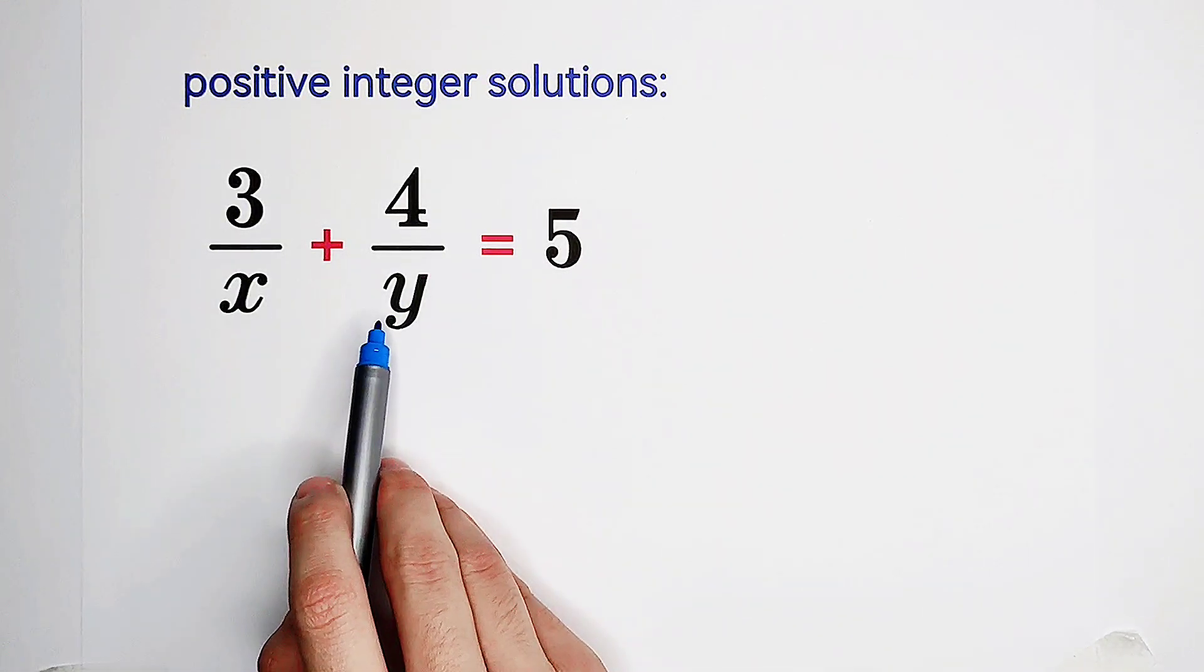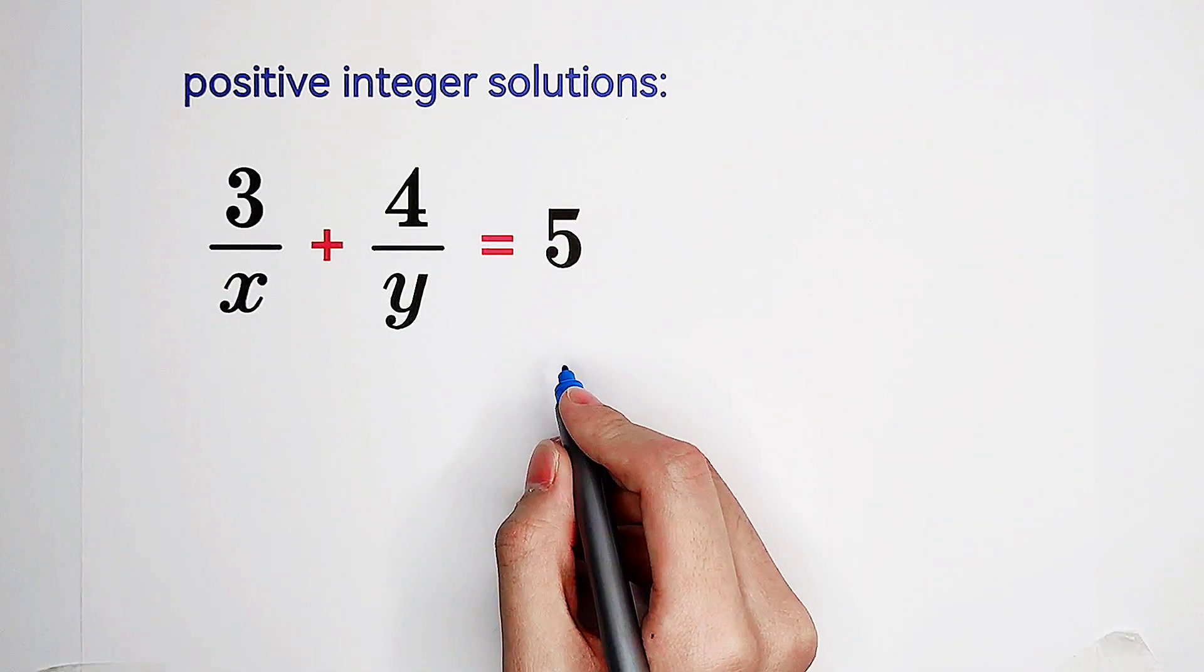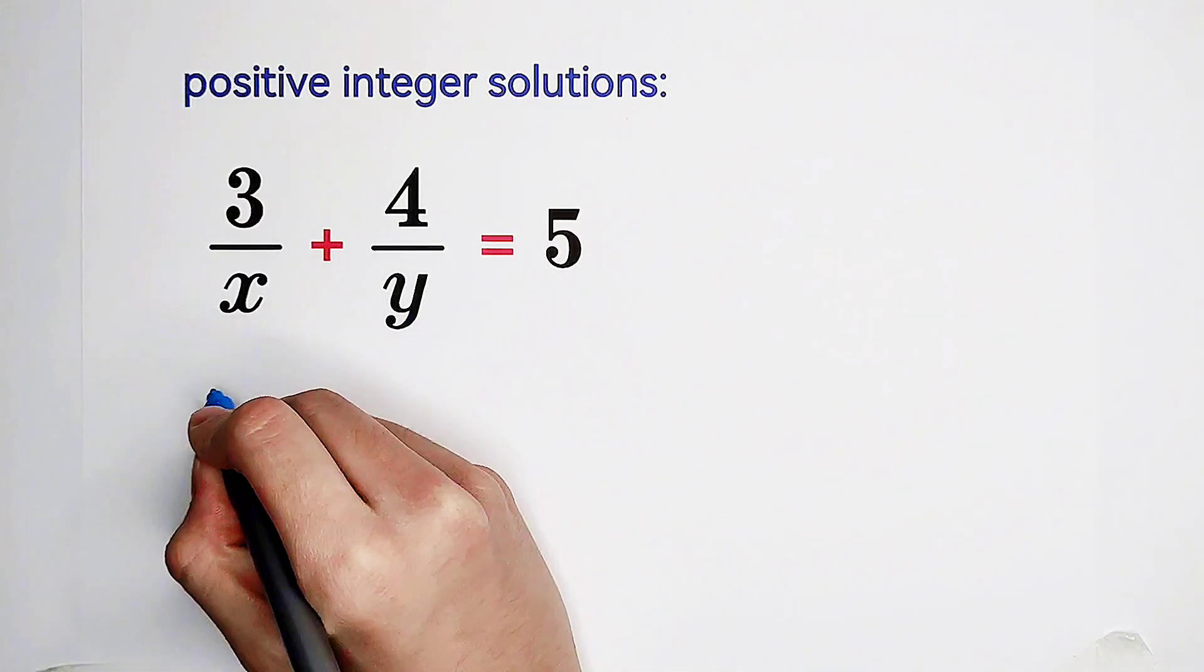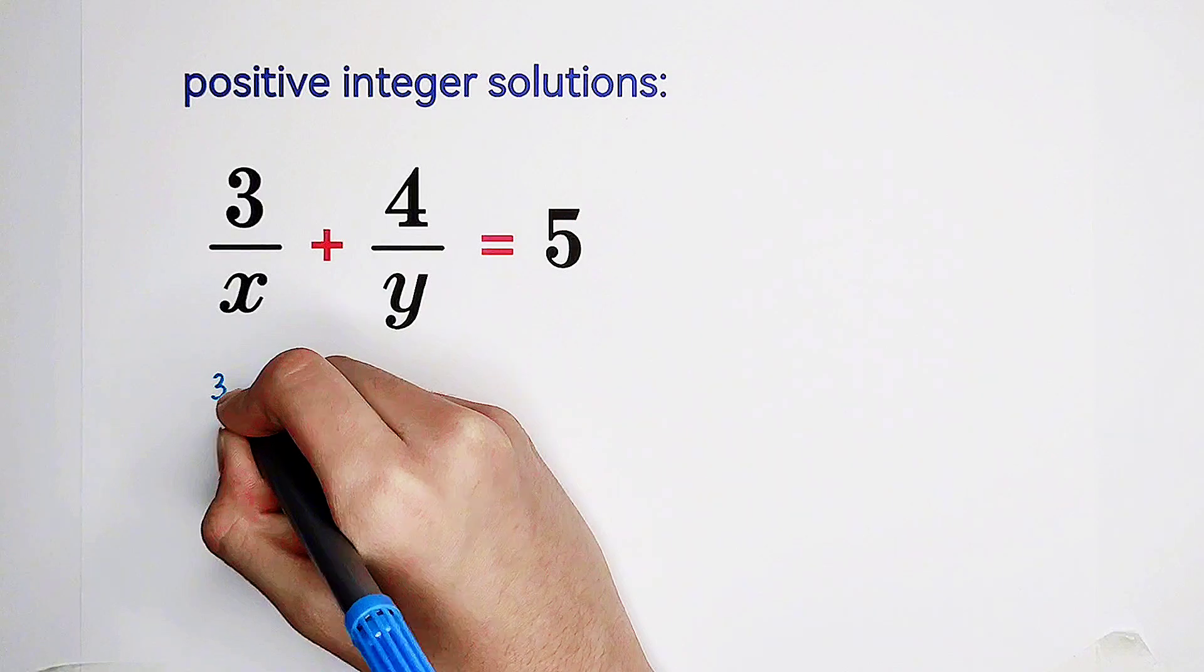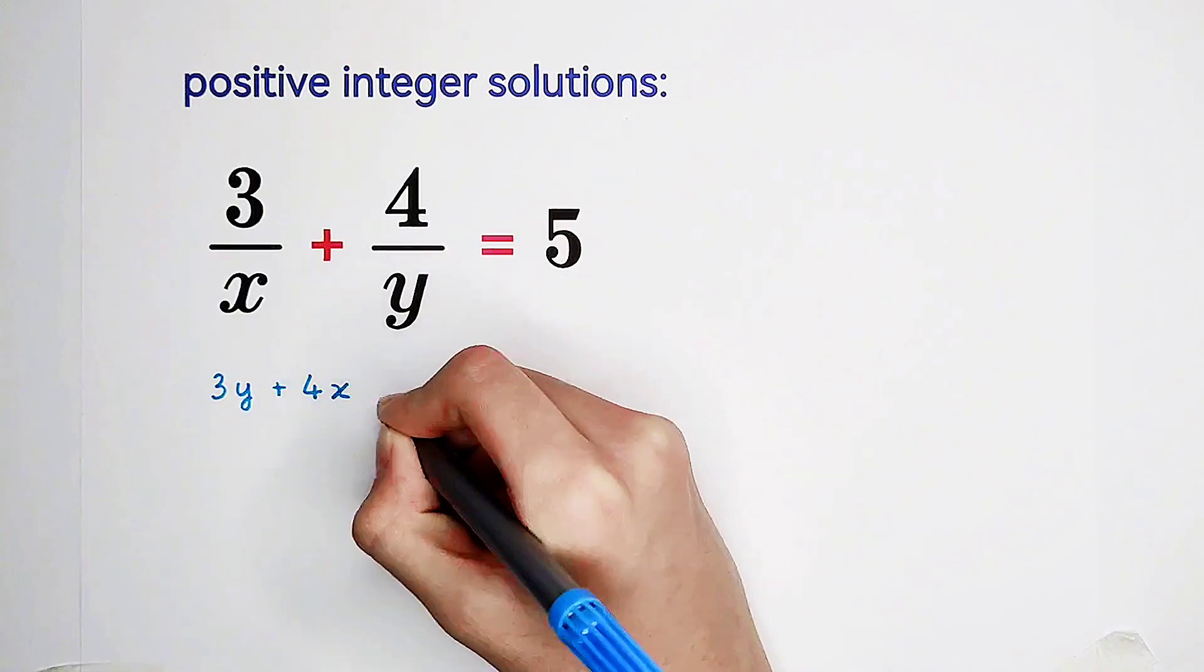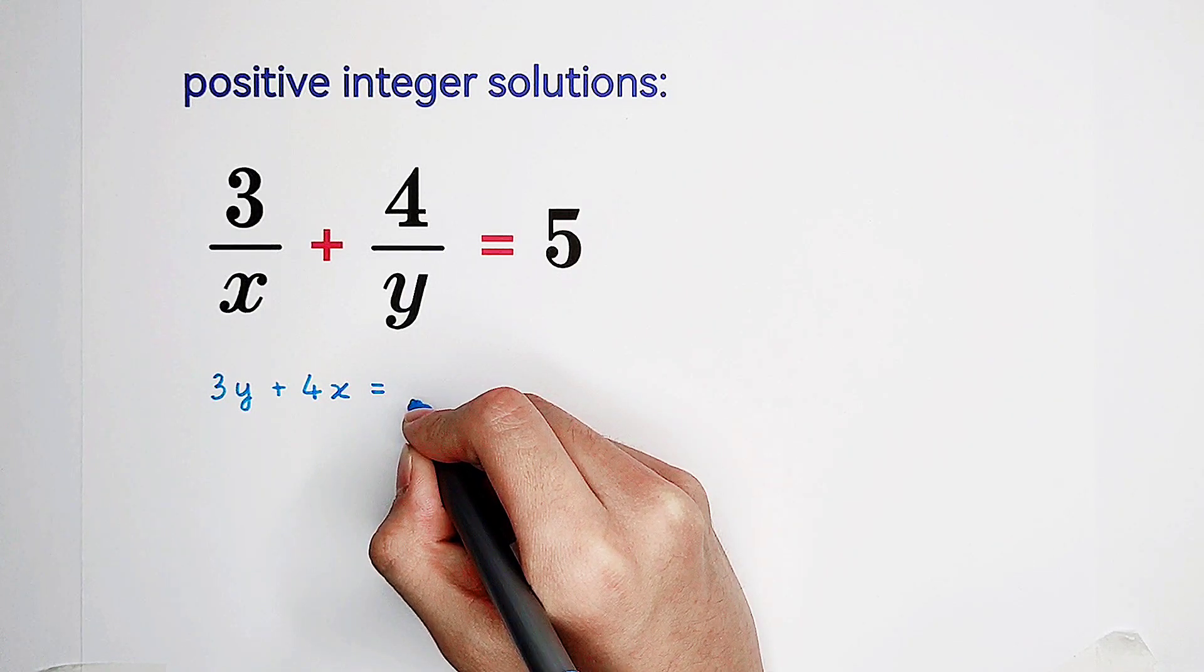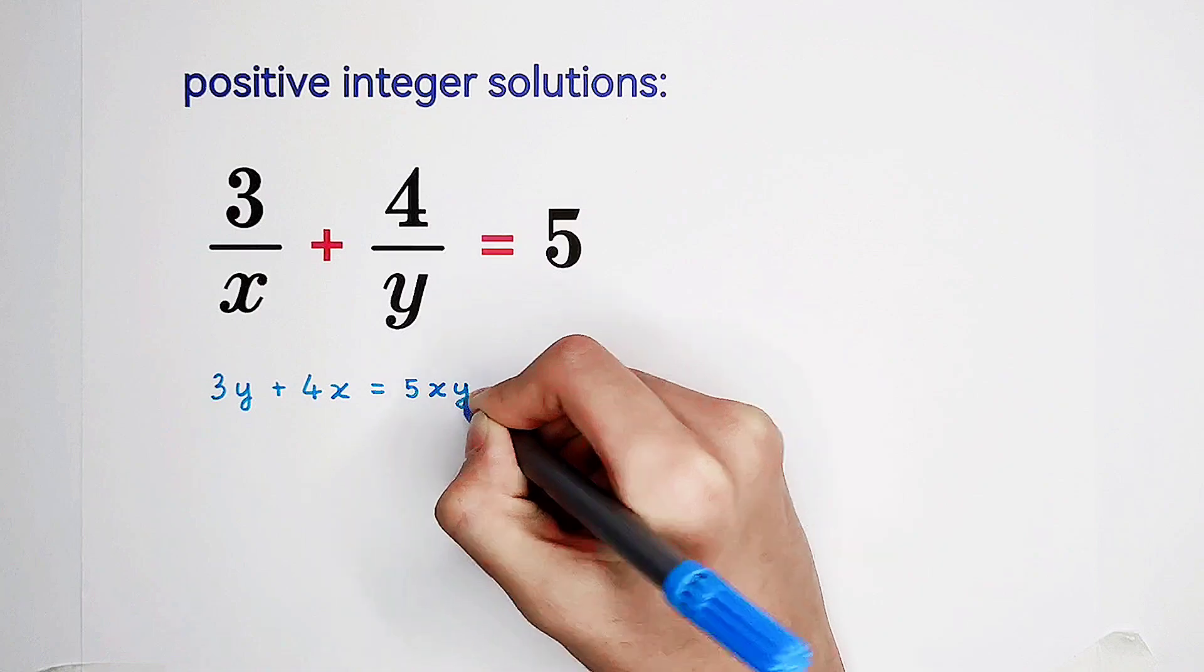x and y are the denominators, and we hate them always. So what shall we do? We can multiply both sides by x times y. So the left side will be 3 times y plus 4 times x equals, on the right hand side, we'll end up with 5 times xy.